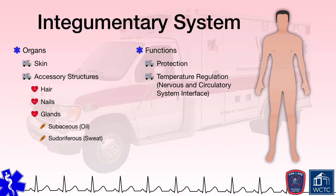Humans are warm-blooded mammals that sustain their own internal body temperature and do not tolerate extremes in heat or cold. Being hyperthermic, too hot, or hypothermic, too cold, can indeed result in death. The integumentary system works with the circulatory and nervous systems to regulate body temperature by either constricting or dilating blood vessels in the skin to help the body either retain heat or expel heat, respectively. In hot environments, the integumentary system also produces sweat that, when it evaporates, cools the body as well.